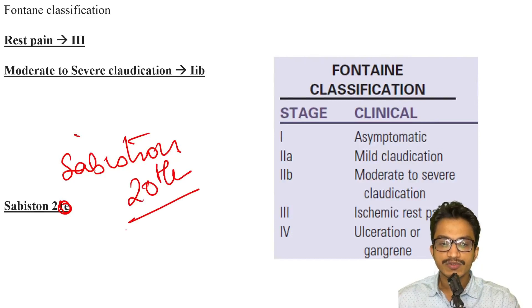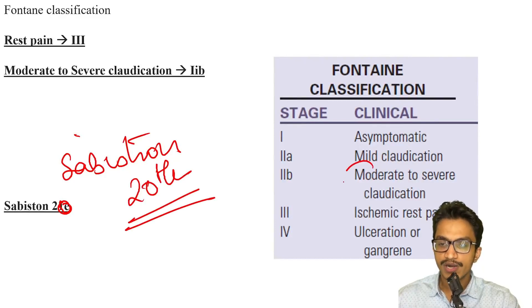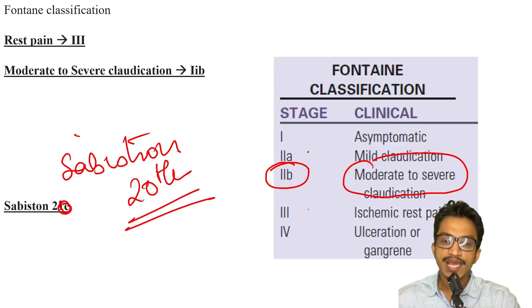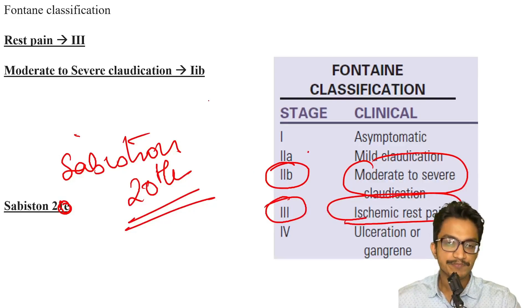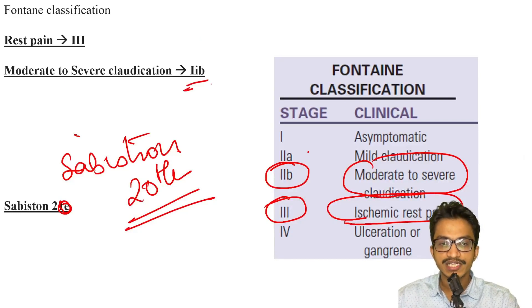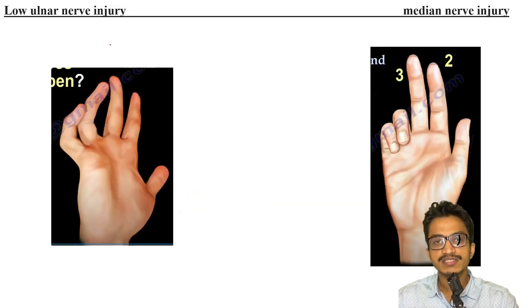For Fontaine classification from Sabiston 21st edition: moderate to severe claudication is stage 2B, and ischemic rest pain is stage 3. So moderate to severe claudication = stage 2B, and rest pain = stage 3.